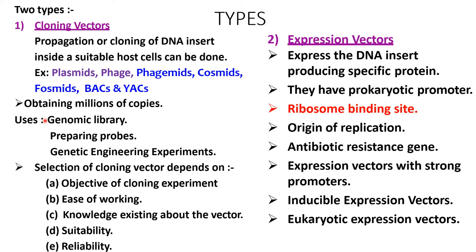Cloning vectors are used for genomic library preparation, preparing probes, and genetic engineering experiments. Selection of cloning vector depends on the objective of the cloning experiment, ease of working, existing knowledge about the vector, and suitability and reliability. Expression vectors have a eukaryotic or prokaryotic promoter and ribosome binding site, as they focus on producing a specific protein. They also contain origin of replication and antibiotic resistance genes.